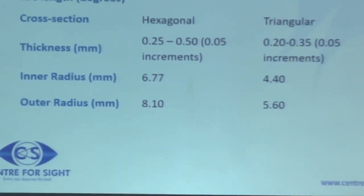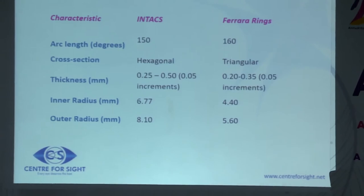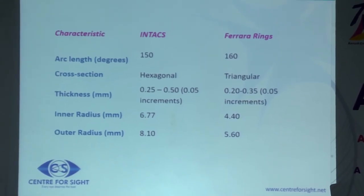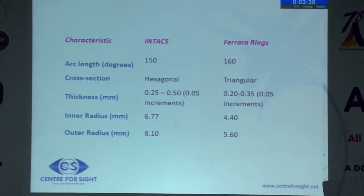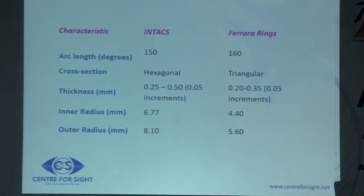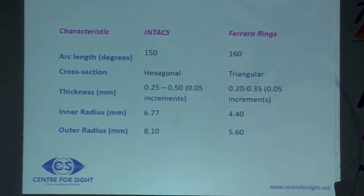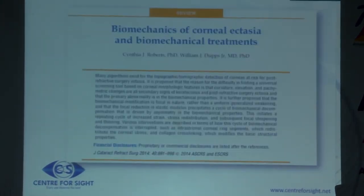The difference is in cross-section and placement in the cornea. The closer the segments are to the pupil, the more flattening they will induce. The cross-section must be chosen so that visual side effects are limited. Thicker rings induce more flattening.